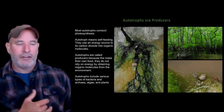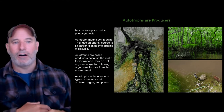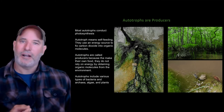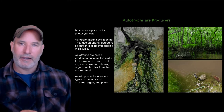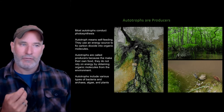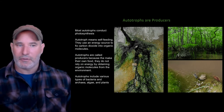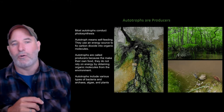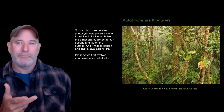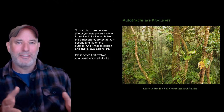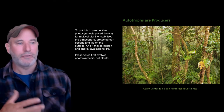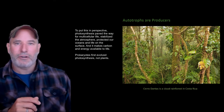Plants, cyanobacteria, and algae are all autotrophs — also called producers. Every autotroph takes carbon dioxide and fixes it into an organic molecule, using a source of electrons and hydrogens, plus energy from sunlight. Photosynthesis paved the way for multicellular life, stabilizes our atmosphere, protects our oceans, and makes life on the surface possible.